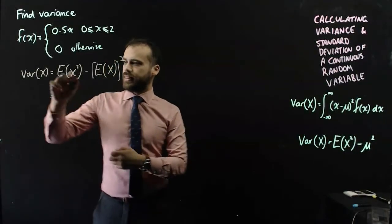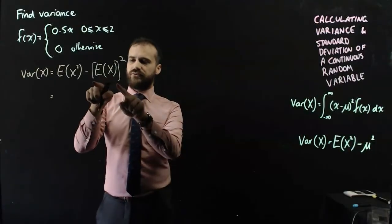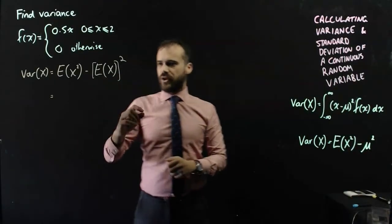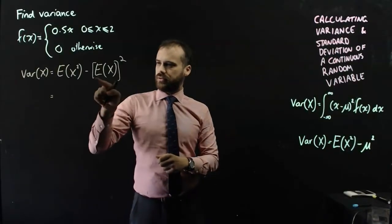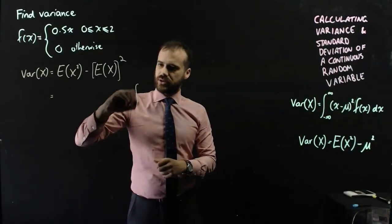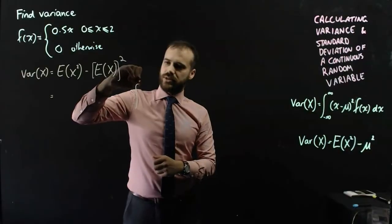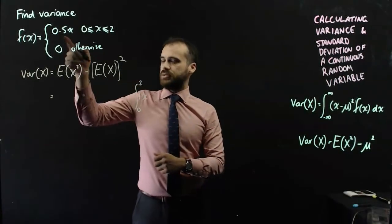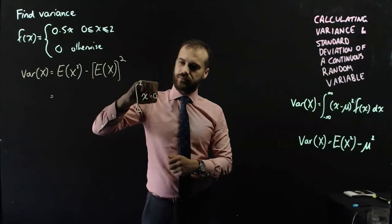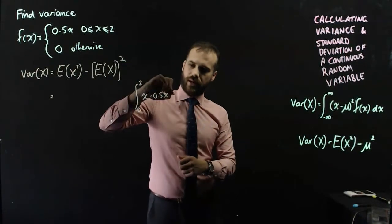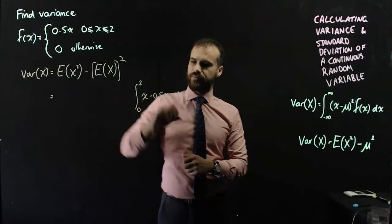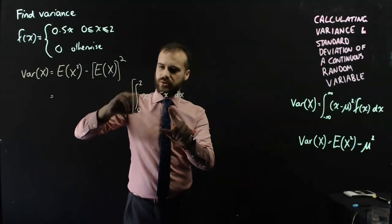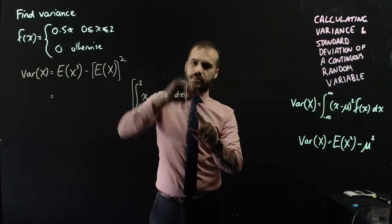So, now the expected value... I'll do this one first, I think, just because we're more familiar with that. Now, to find the mean, to find the mean, we're integrating between 2 and 0, x times the function, with respect to x. That's this bit, but then I need to square my result.